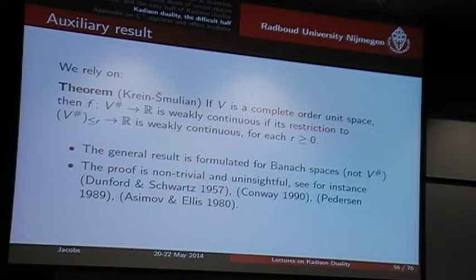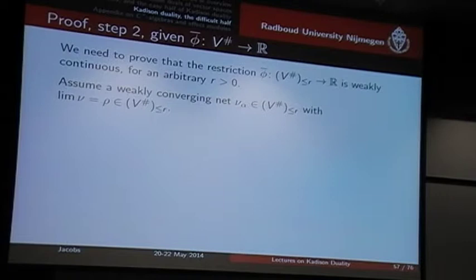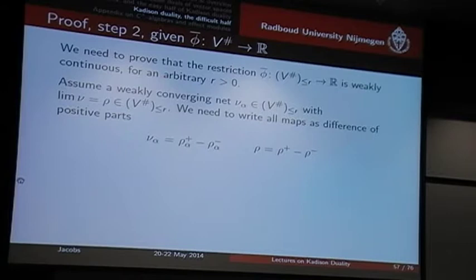So where are we? We have this phi-overline from V-sharp to R. We know it's linear, but we need to show that it's weakly continuous. And according to Krein-Smulian, it's sufficient to show that its restriction to each ball of norm R is weakly continuous. So let's try to do this. We take a net, and we need to show that phi-overline preserves the limit of this net. Now you have to go through the whole construction of this phi-overline — that means split the input into two positive parts as a difference. We scale them. I will not go through the details.